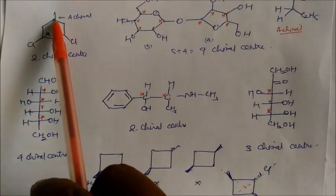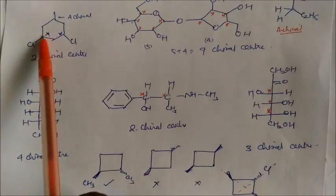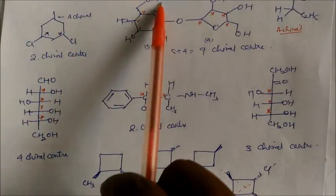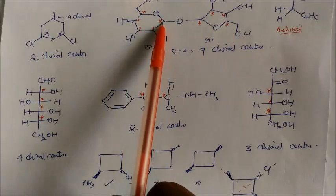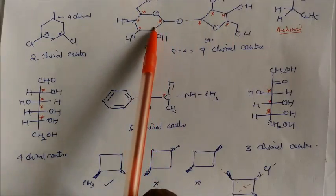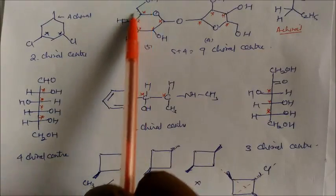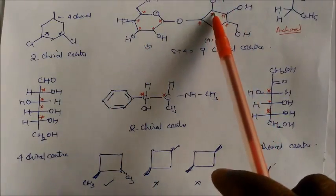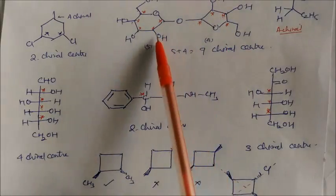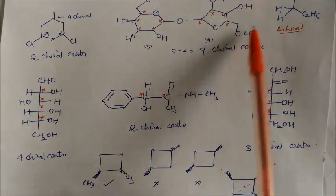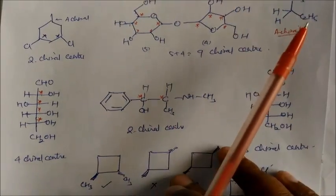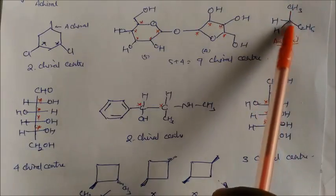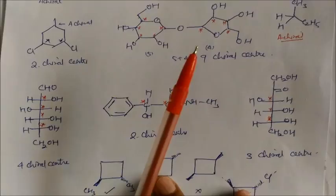There are some more examples. In this compound, these two carbons could be your chiral centers, so there are two chiral centers in this cyclic compound. In the next cyclic compound, there are four different groups, so there are five chiral carbons. In this other group, there are four chiral carbons — so total five plus four equals nine chiral centers in this whole molecule. In this molecule, a carbon having two same groups cannot be called chiral. This is a meso compound.